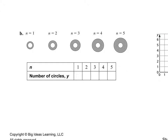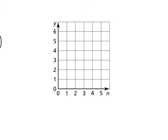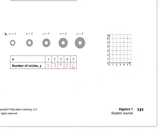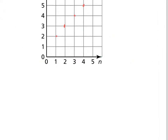For the next pattern — the number of circles: the first set of drawings has two circles, the second set has three, the next has four circles, the next has five circles, and then six circles. Let's graph those points. The first drawing had two circles, the second had three, the next had four, then five, and the fifth one had six. We're not going to connect them because there's no 1.5 drawing — we can't put a point there.